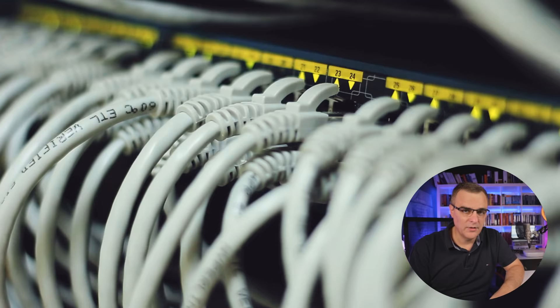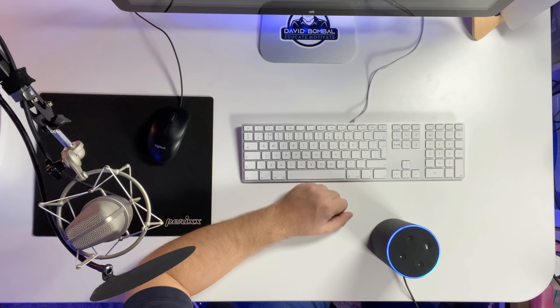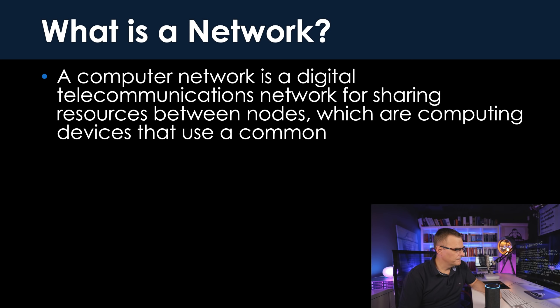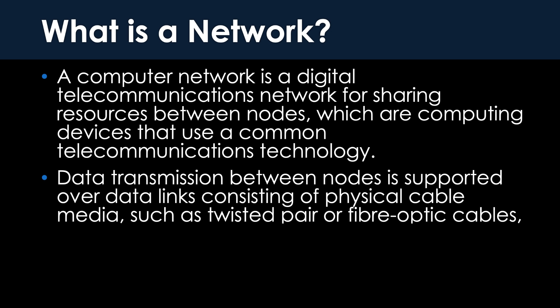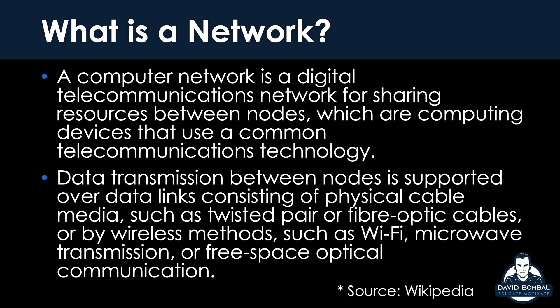So what is a computer network? Here's the challenge — I'm going to ask the robots what a computer network is. See how much you understand by this definition. Alexa, what is a computer network? A computer network is a digital telecommunications network for sharing resources between nodes, which are computing devices that use a common telecommunications technology. Data transmission between nodes is supported over data links consisting of physical cable media, such as twisted pair or fibre optic cables, or by wireless methods, such as Wi-Fi, microwave transmission, or free space optical communication. Okay, so there's the course. We finish now. We all understand what computer networking is.